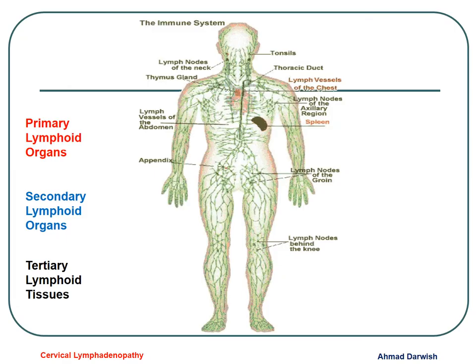First of all, we have to know that the lymphoid organs and lymphoid tissues are widespread all over the body, constituting the immune system, including three main categories: the primary lymphoid organs, including the thymus and the bone marrow. The bone marrow is where B lymphocytes are produced and the thymus where T lymphocytes are produced.